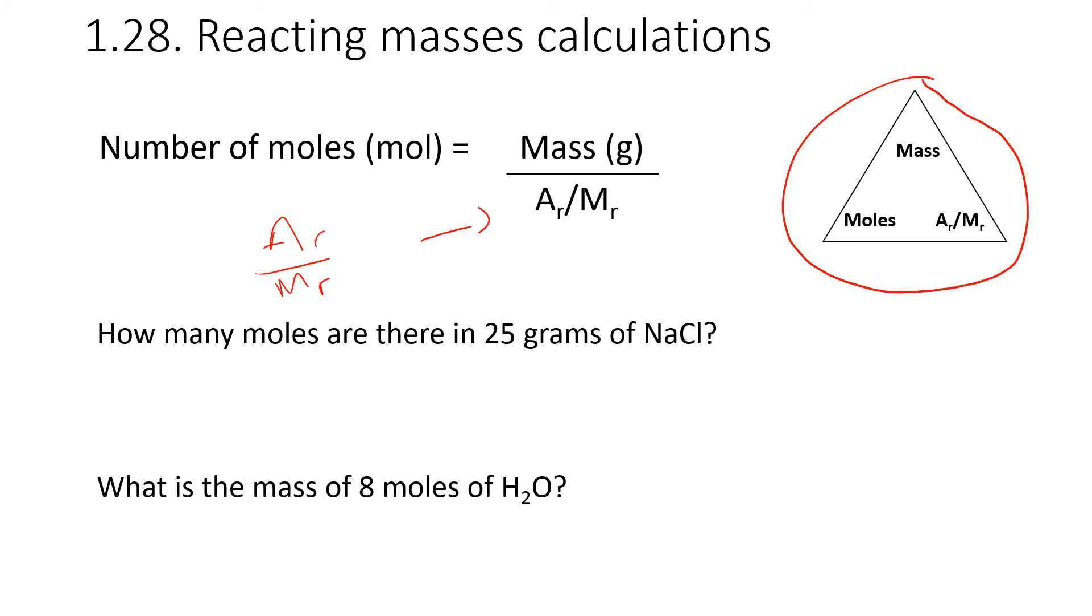How many moles are there in 25 grams of NaCl? We're calculating moles, so we need to do the mass divided by the relative formula mass, because we have a molecule and not an atom. The mass is 25. The relative formula mass is 23 for sodium plus 35.5 for chlorine. So do 25 divided by 58.5, which equals 0.427.